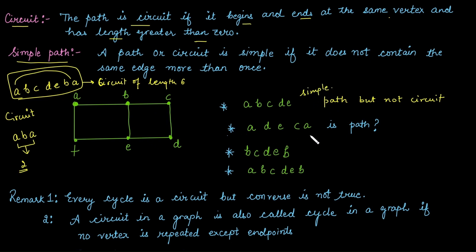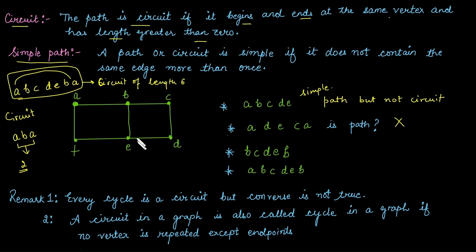Consider a-d: there is no edge between a and d, so this is not a path. For b-c-d-e-b, the endpoints are the same so it is a circuit. Since we are using distinct edges, it is a simple circuit. The length of this circuit is four.